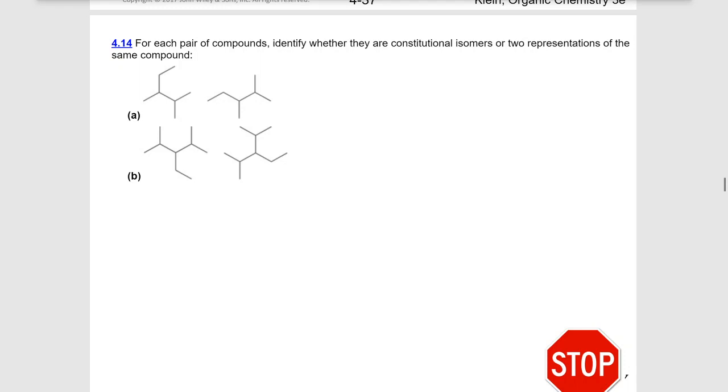On the left for A, I'm going to say one, two, three, four, five. So I have two, three dimethylpentane. On the right, one, two, three, four, five, I have two, three dimethylpentane. So these molecules are the same.